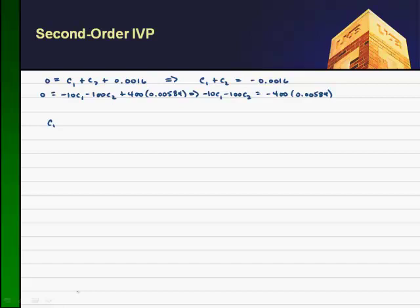Let's see what I find for C1 and C2. I get that C1 is roughly equal to negative 0.02776. And I find the value for C2 to be roughly equal to 0.026. So if I put that all back together again, I should get my equation for the charge Q of T. But of course, if I want the current, I just take the derivative of it.